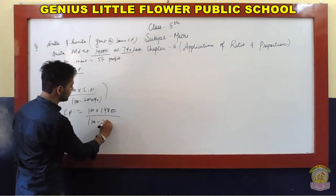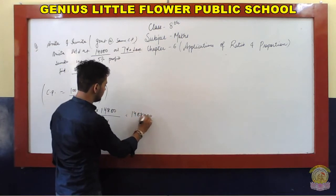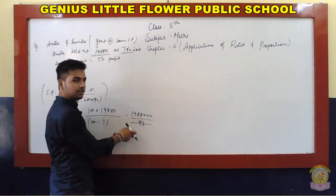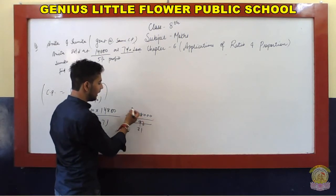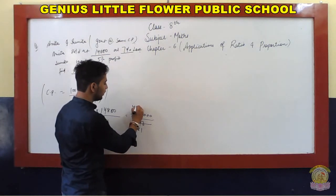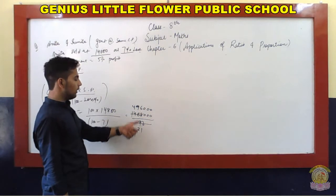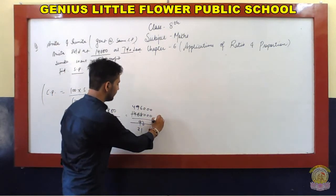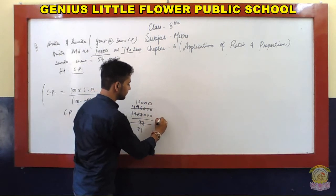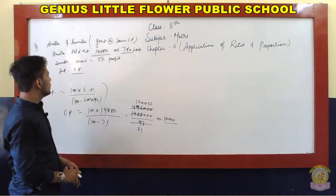Since there is a 7% loss, the denominator becomes 100 minus 7, which is 93. So cost price equals 100 into 14,880 divided by 93. Simplifying, divide both 93 and 14,880 by 3 to get 31 and 4,960. Then dividing further gives 16, so cost price equals 16,000 rupees. The cost price of the goat is 16,000 rupees.